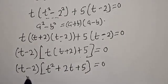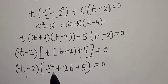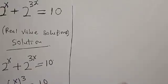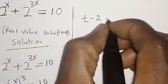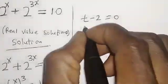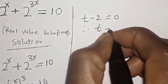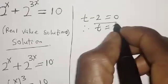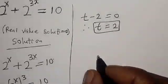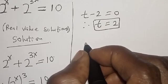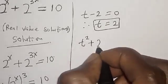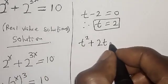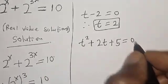There are two cases here. Case one: t minus 2 is equal to 0, or case two: t squared plus 2t plus 5 is equal to 0. From the first case, t minus 2 equals 0, therefore t is equal to 2. That is the first value of t.